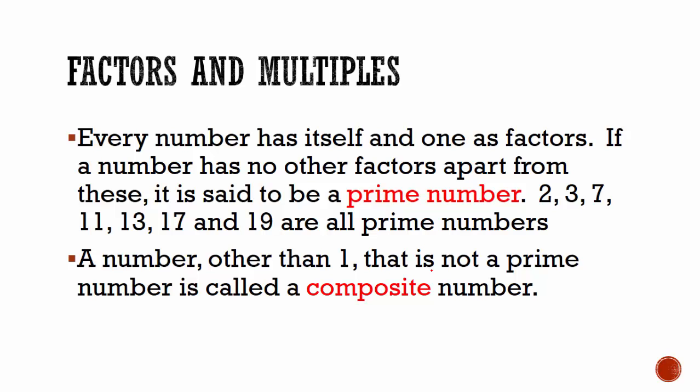Every number has itself and 1 as factors. If a number has no other factors apart from these, it is said to be a prime number. If we look at 9, we know that 1 and itself are always factors of the number.